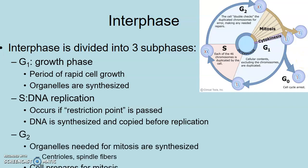Finally, we have the G2 phase — the phase right before the cell divides. Just like a football team right before they go on the field: they're in the locker room, they put on their pads and helmet because football is dangerous. That's essentially what's happening during G2. The cell makes sure the DNA is copied, edits it — so the players know their plays — and then the cell gets ready to divide by making the organelles it needs, specifically the centrioles and the spindle fibers. Those are structures used during mitosis to make the cell split.